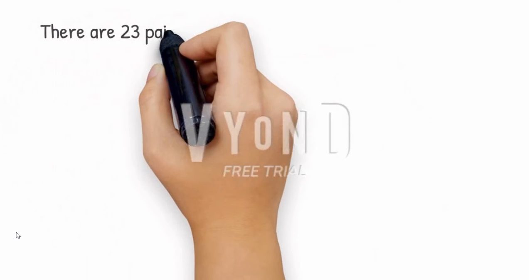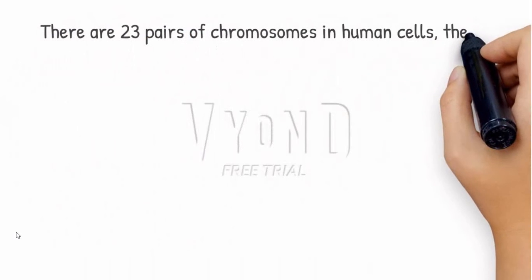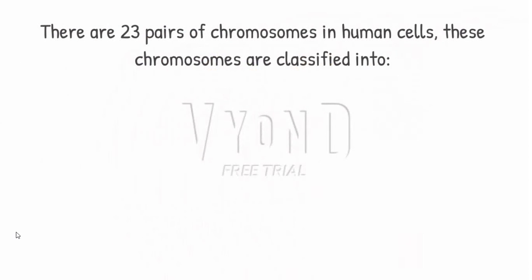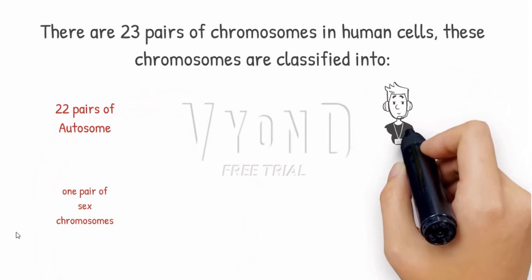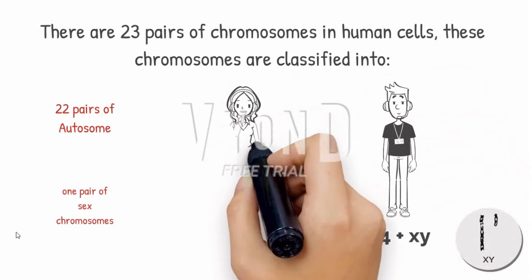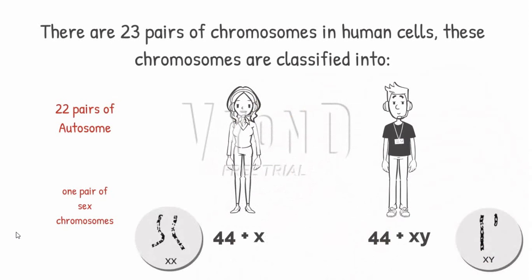There are 23 pairs of chromosomes in human cells. These chromosomes are classified into 22 pairs of autosomes and 1 pair of sex chromosomes. So, the human male genetic structure will be 44 autosomes and XY, while the human female will be 44 autosomes and XX.